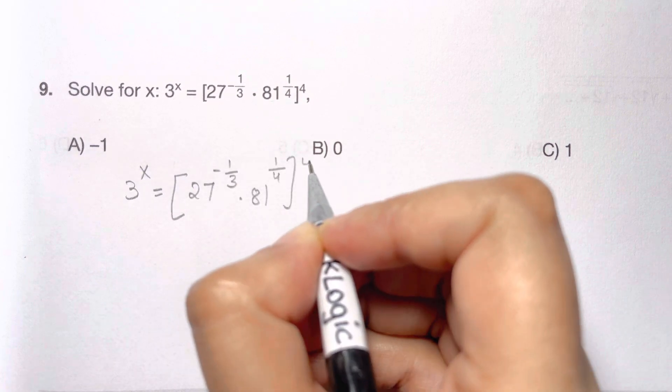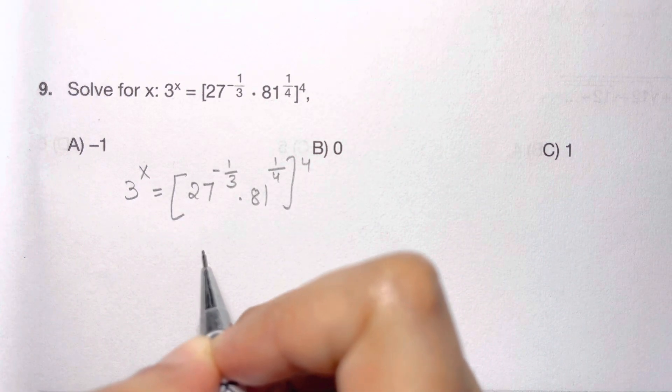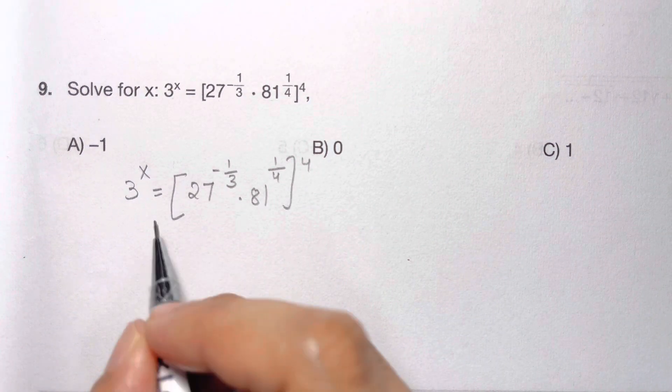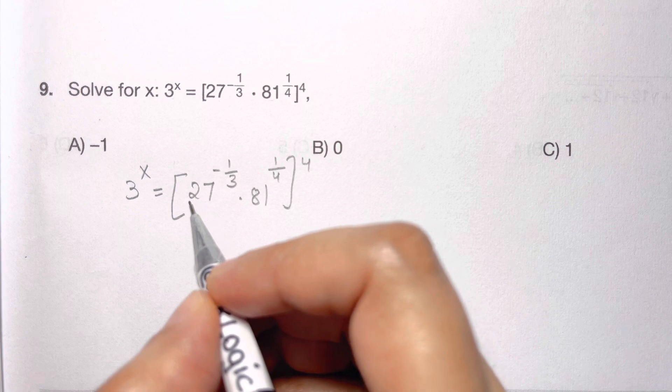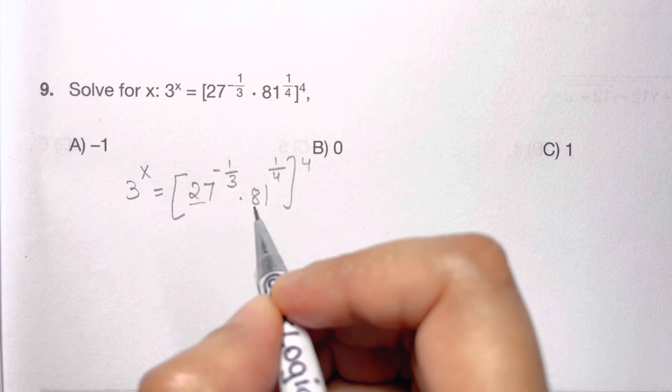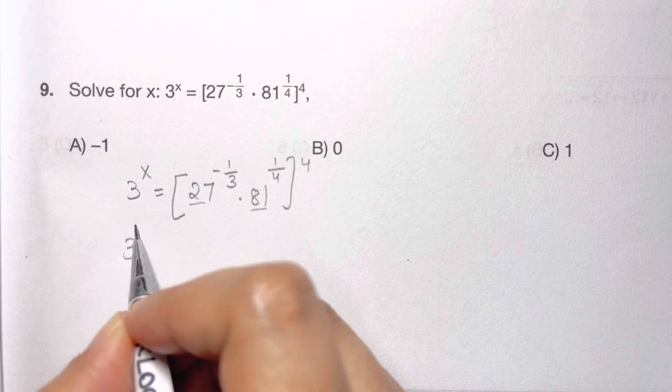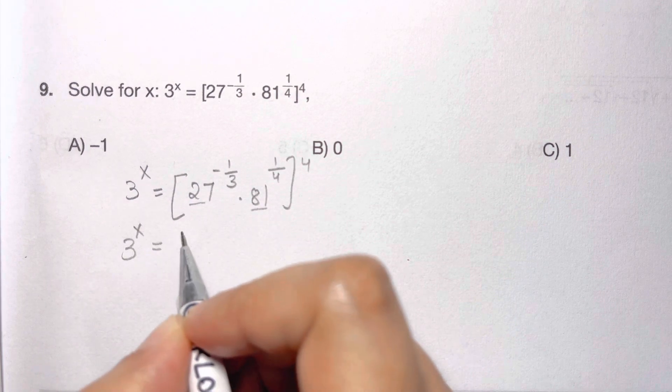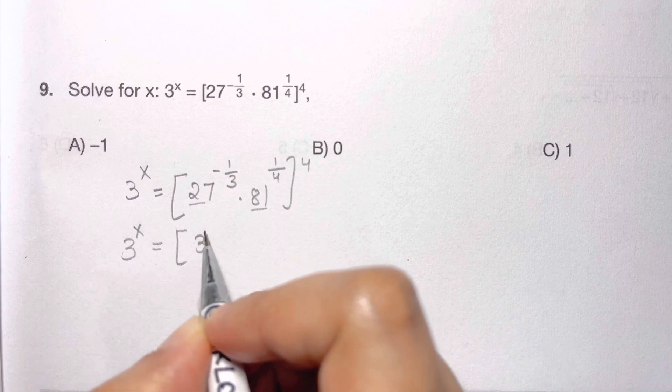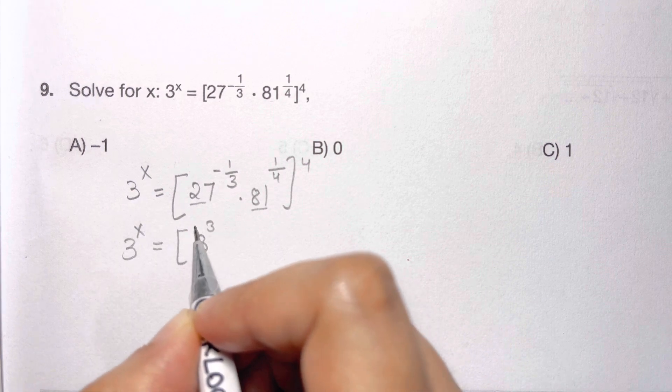Now what I'm going to do in my first step is I'm going to split this 27 and 81 in terms of 3, because I have a base of 3 here. So let me make it the same: 3 to the power of x equals 3 cubed is 27, whole to the power of minus one-third.